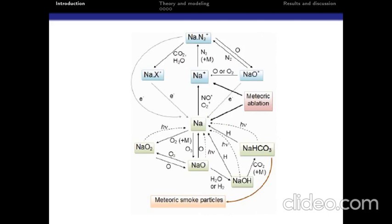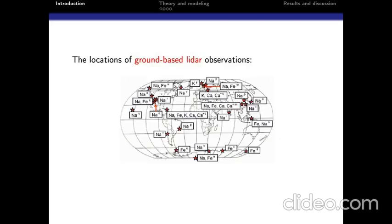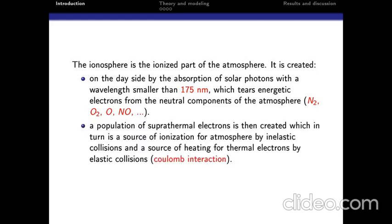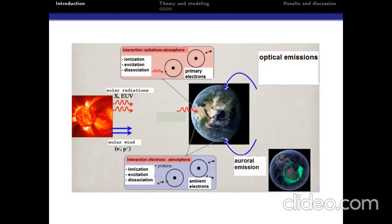The fluorescence of the sodium atom is used by lidars and satellites as a tracer for observing the ionosphere region. The diagram of sodium chemistry indicates clearly the relationship between sodium species and ionospheric species, such as electrons and major ions. The ionosphere is the ionized part of the atmosphere.